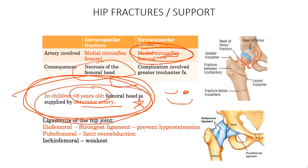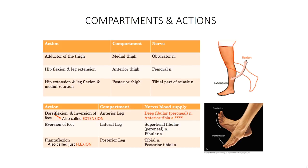Ligaments of the hip: the iliofemoral is the strongest and prevents hyperextension. The pubofemoral limits abduction. The ischiofemoral is the weakest. These form the capsule of the hip joint. For thigh compartments review: tibial and sciatic nerves supply the posterior, femoral nerve the anterior, obturator the medial, and the lateral depends on which muscles are involved.